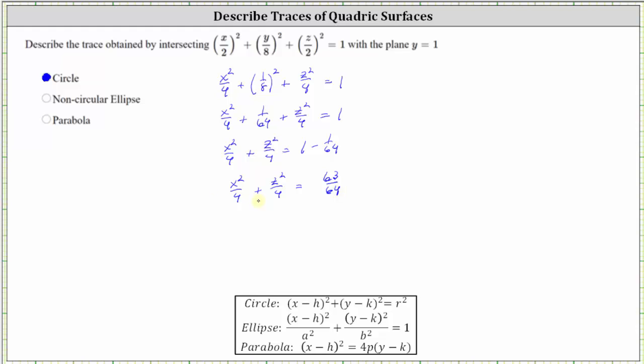And now to clear the denominators on the left, let's multiply both sides of the equation by four. On the left, we now have x squared plus z squared. On the right, four and sixty-four share a common factor of four. There's one four in four and sixteen fours in sixty-four. The right side simplifies to sixty-three sixteenths.